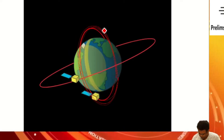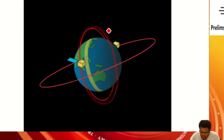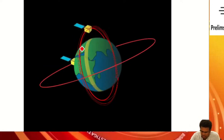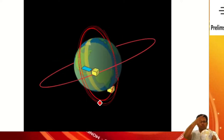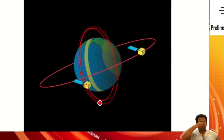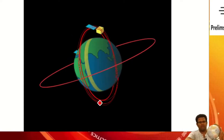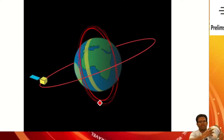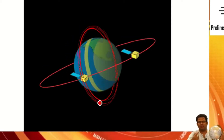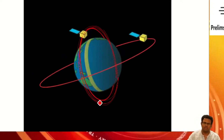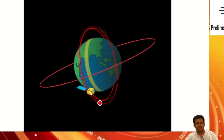Now, the next point: sometimes this polar orbit satellite will be in front of the sun, and sometimes when it is rotating from pole to pole it will be on the dark side. When it is on the day side there will be good pictures, and when it is going back in the dark side it will not be able to take good pictures. Good pictures are possible when sunlight is available.